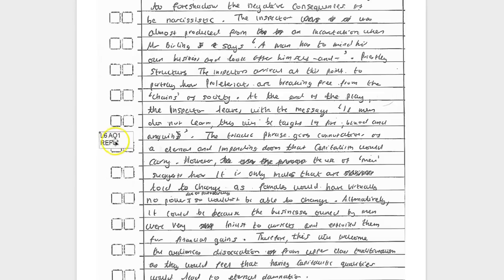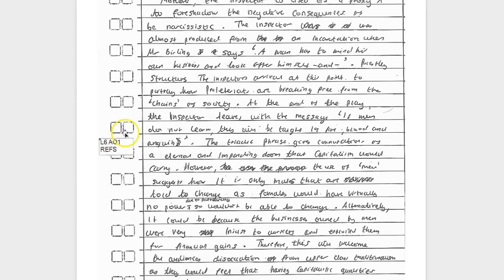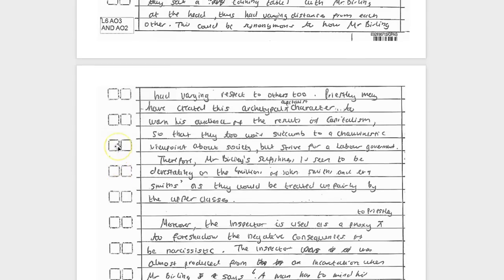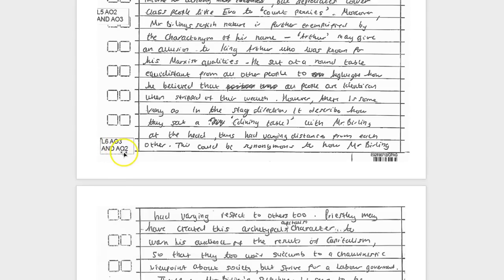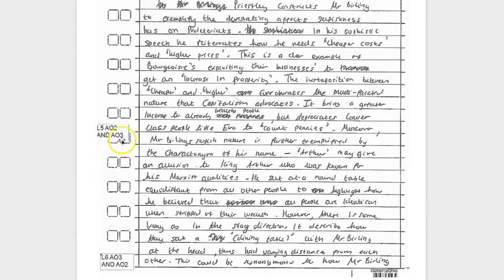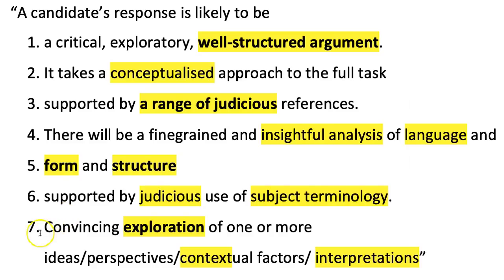Then level 6 for AO1. What you'll notice is if you only have one level 6 example at AO1, one at AO3, and one at AO2, that is enough to get you the top marks, even if elsewhere in the essay you're only level 5. At the end of the essay I will go over the seven points that make a top grade answer. These come straight from the mark scheme — these are the only seven things the examiners are looking for. Once you get used to doing those, you get top marks.